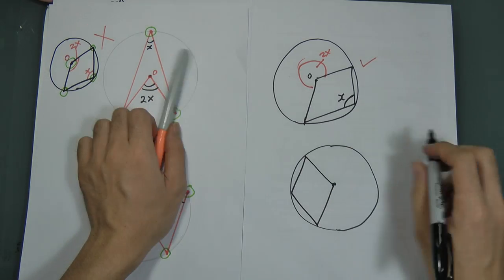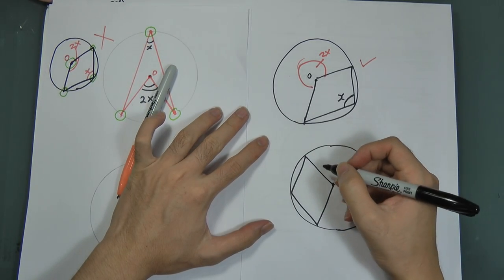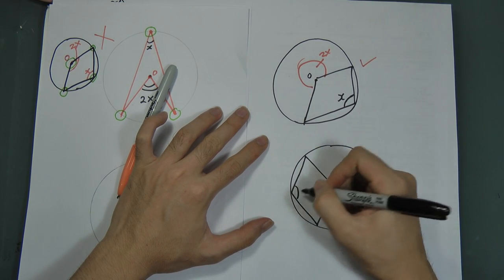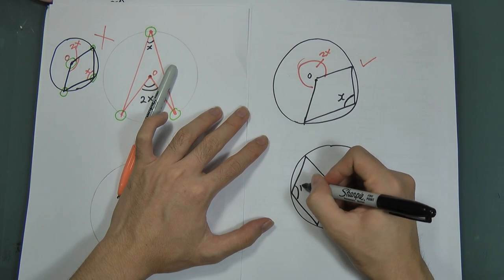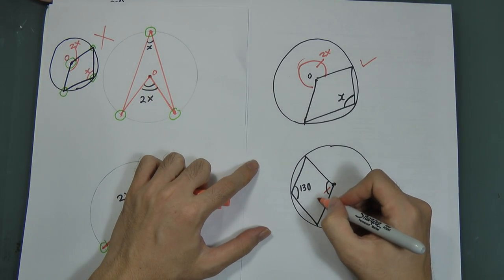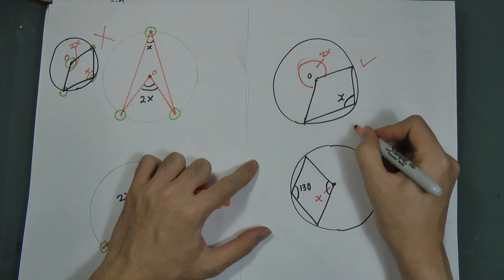So if the question gives you 130, and then it asks you to find this angle x - so find x.